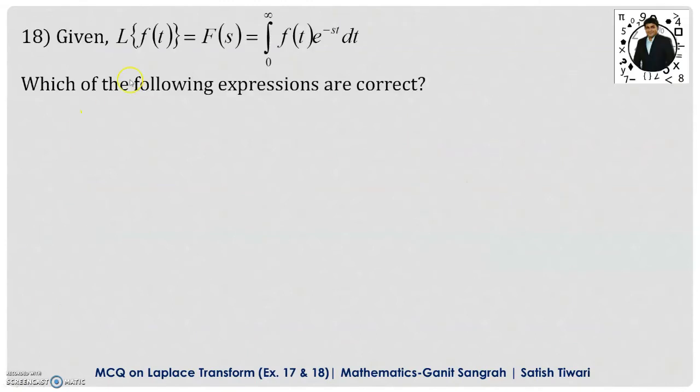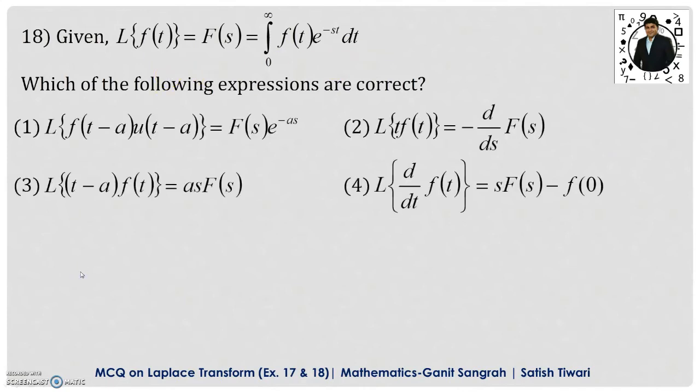Example number 18: Given Laplace transformation of f of t equals f of s, which equals integral 0 to infinity f of t e to the power minus st dt. And if you observe, this is the definition of Laplace transform. Which of the following expressions are correct? That we have to find here.